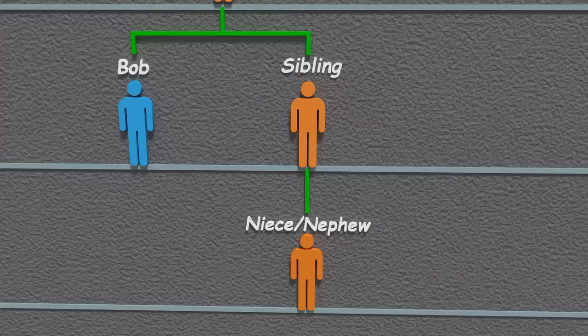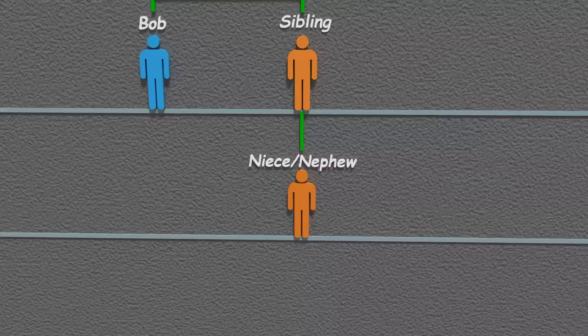At some point, Bob's sibling may decide to have a child of their own. This person will be Bob's nibbling, or more commonly known as niece or nephew.